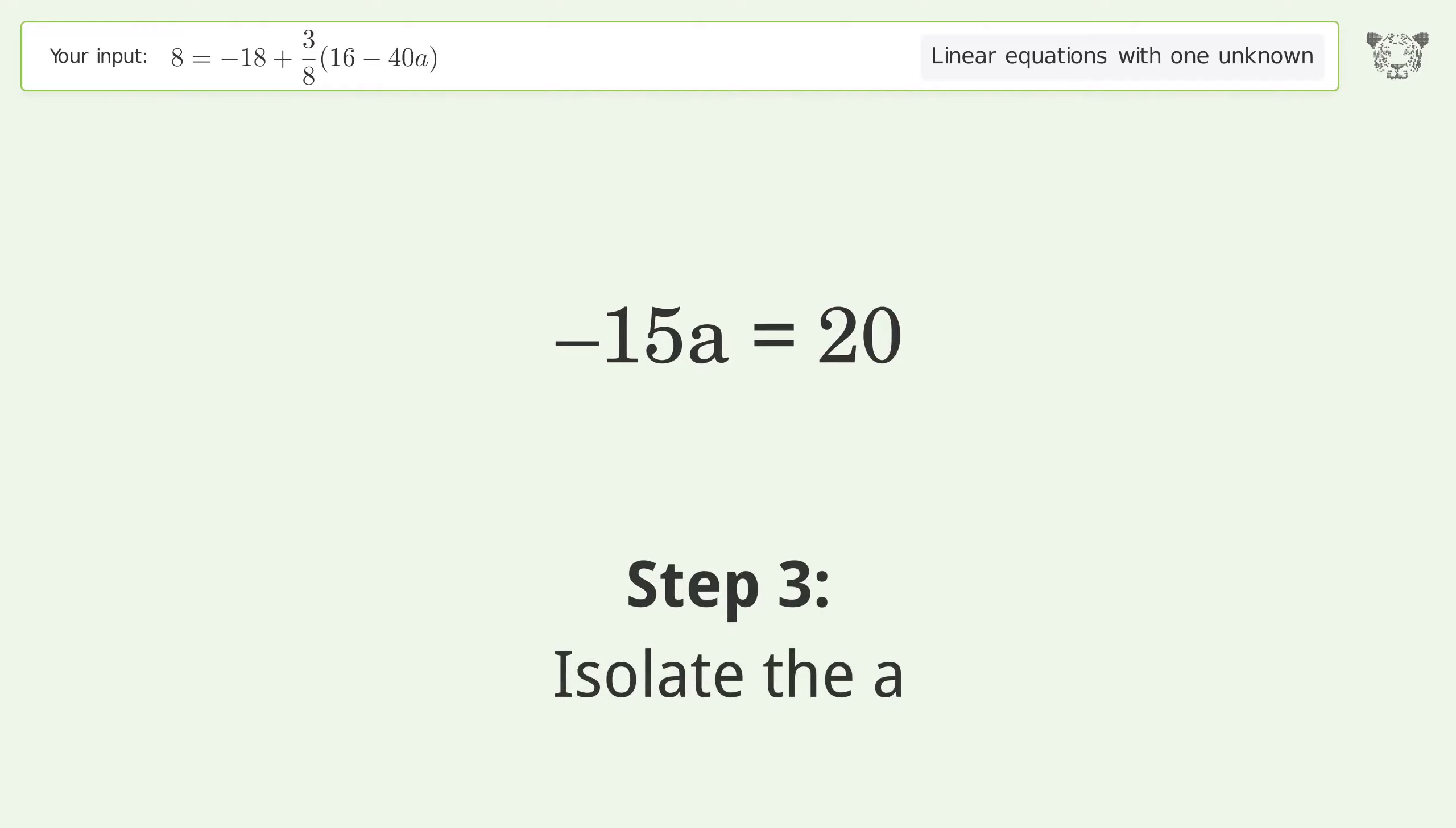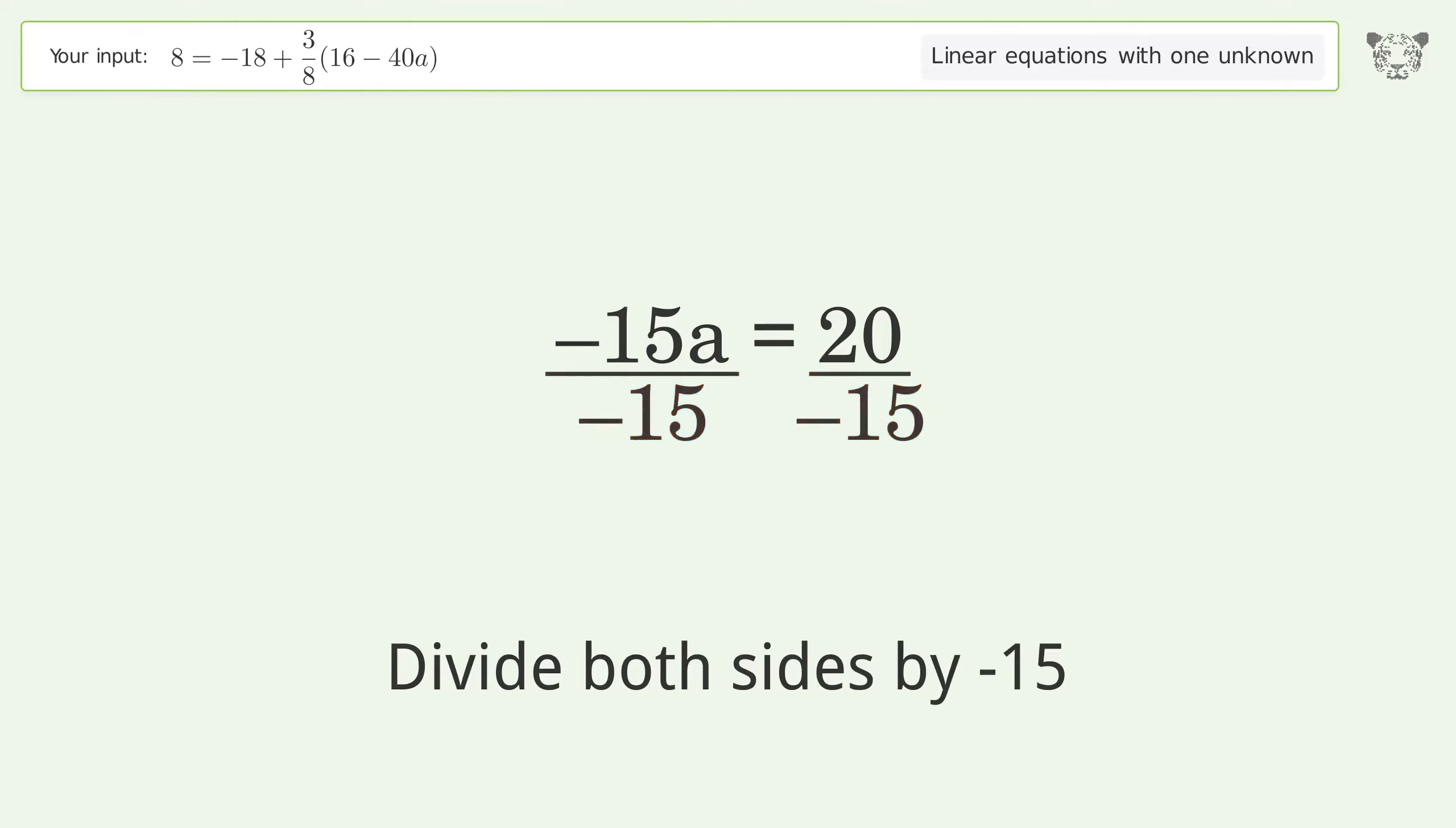Isolate the a. Divide both sides by negative 15. Cancel out the negatives. Simplify the fraction.